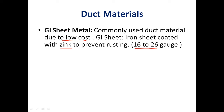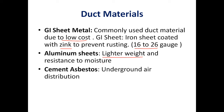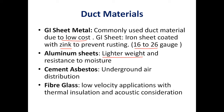Aluminum sheets can also be used, taking advantage of their lighter weight and natural resistance to moisture without any coating, though they are costlier than GI sheets. Other duct materials include cement asbestos, used in underground distribution for its high strength, and fiberglass, used for low-velocity applications where reduced heat transfer and noise reduction are required. Fiberglass is a poor conductor of heat, limiting heat loss or gain, and it also absorbs noise.